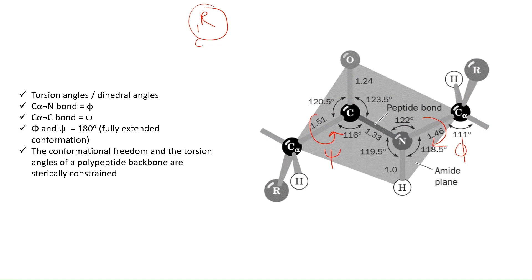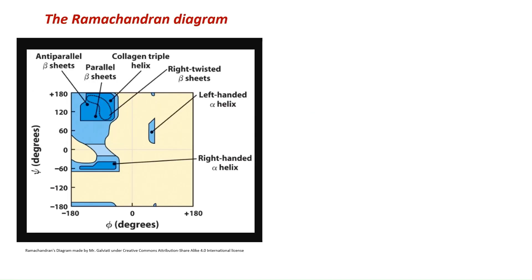The allowed conformations are given by Ramachandran in a Ramachandran plot. All the blue-shaded regions represent allowed conformations; all other positions are not allowed. Within the blue shades, specific positions correspond to: right-handed alpha helix, anti-parallel beta sheets, parallel beta sheets, collagen, right-twisted beta sheets, and left-handed alpha helix.